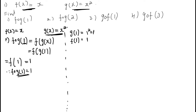Once again: to solve f∘g(1), apply the formula f∘g(x) = f(g(x)). First calculate g(1): g(x) = x², so g(1) = 1² = 1. Substitute: f(g(1)) = f(1). Since f(x) = x, f(1) = 1. So f∘g(1) = 1.